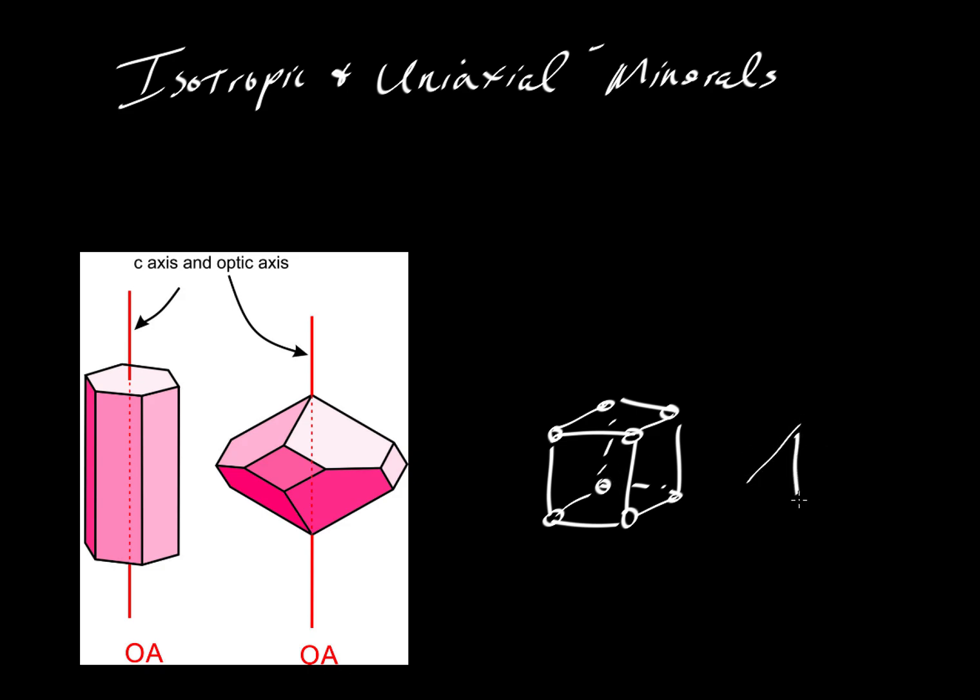We could have a perfect octahedron of fluorite or a dodecahedron, which I will not attempt to draw, of garnet. But if we have halite or fluorite or garnet, they all belong to the isotropic system.